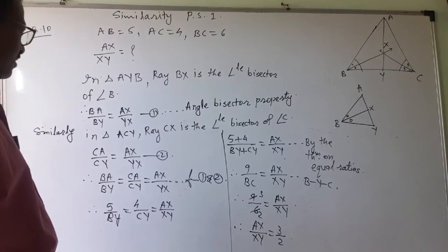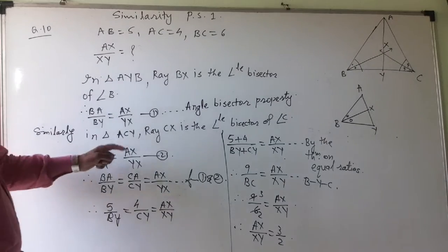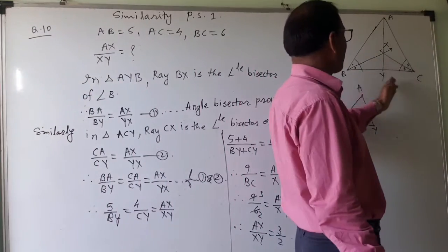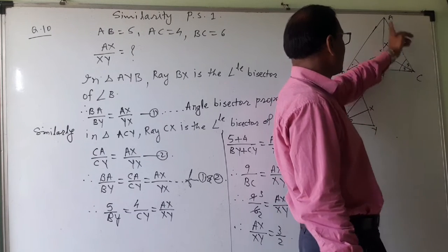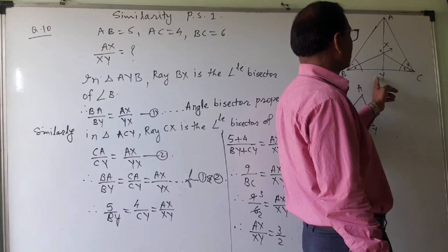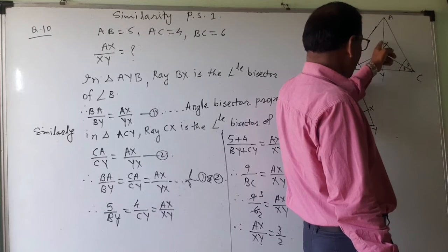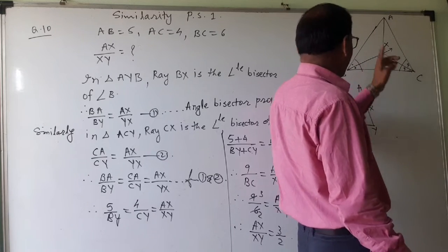Similarly, in triangle ACY, this is ACY. This is the angle bisector. So CA upon CY is equal to CA. So AX, CY, then YX.